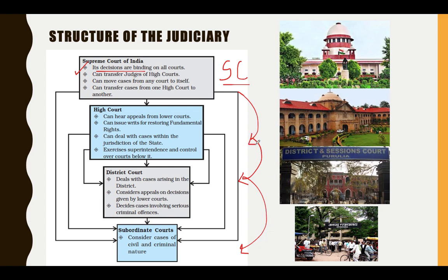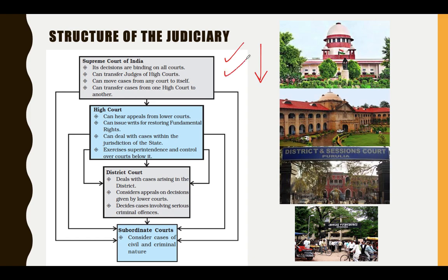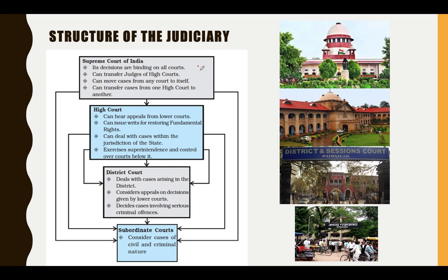If there is a Supreme Court decision, it is binding on all courts below — no court can refuse a Supreme Court decision. Here's a GK check: when India was not independent, the Supreme Court was not the supreme authority. The highest body at that time was called the Privy Council. The Privy Council was the supreme court of the country when India was not free. That was just a general knowledge question.